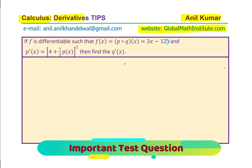You can treat this as a thinking question. Let us look into this problem. If f is differentiable such that f(x) = p(q(x)) = 3x - 12, and the derivative p'(x) is given as 4 + (1/3)p(x)², then find the derivative of the inside function q'(x).